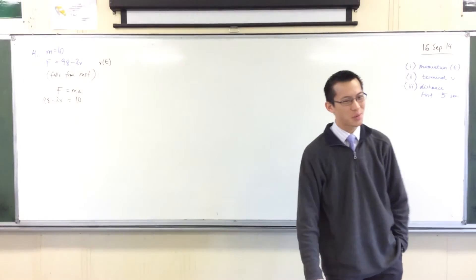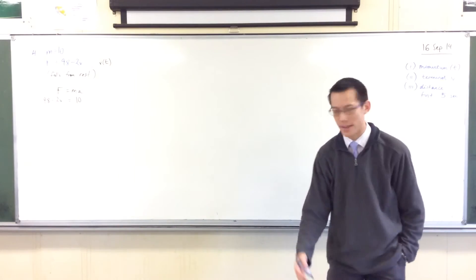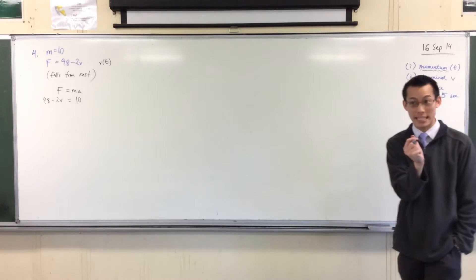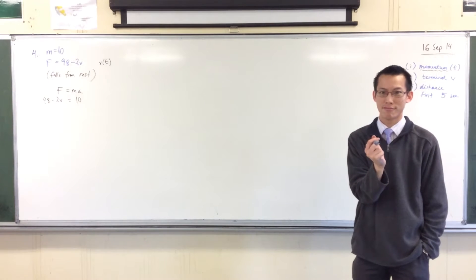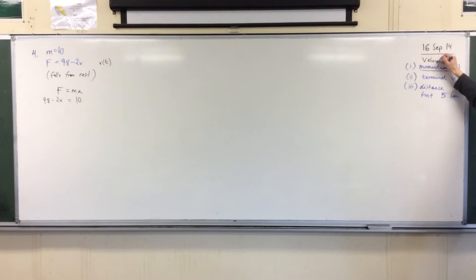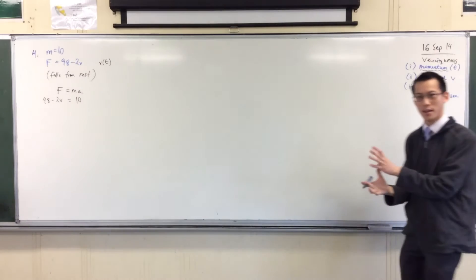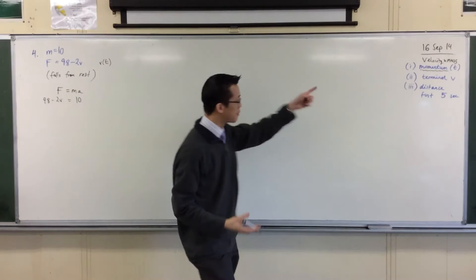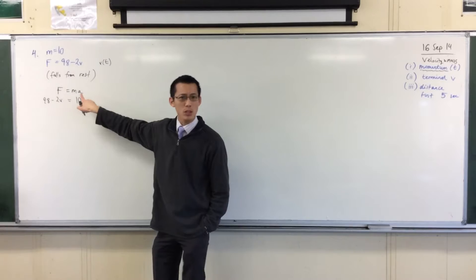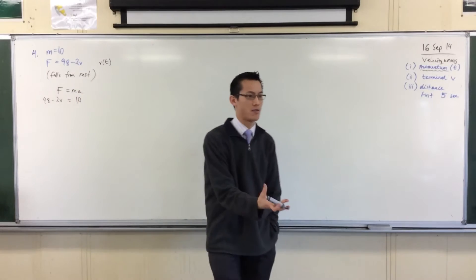Now, we're going towards momentum. So how do we get to momentum? What's the closest idea to momentum? It's velocity, right? What's the difference between velocity and momentum? Mass. So just like force is acceleration with mass, momentum is velocity with mass. Remember this. So mv. Therefore, if I'm heading towards velocity, then how should I write acceleration?